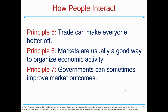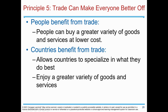The next set of principles deal with how people interact. Principle number five: trade can make everyone better off. Principle number six: markets are usually a good way to organize economic activity. Principle number seven: governments can sometimes improve market outcomes. Principle number five: trade can make everyone better off.